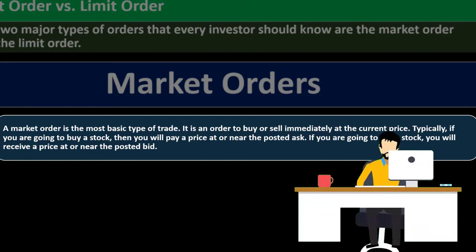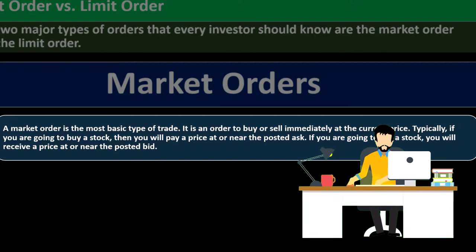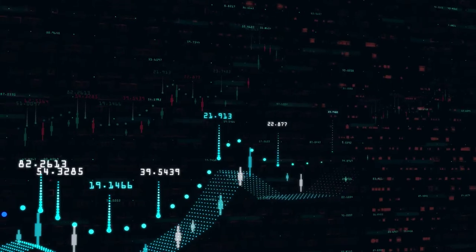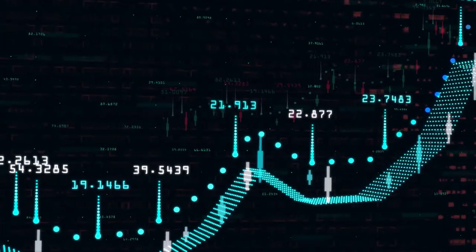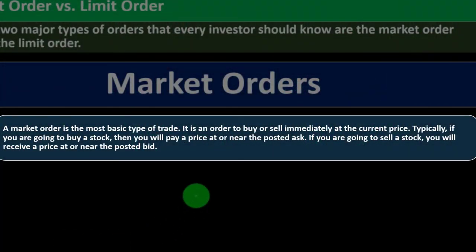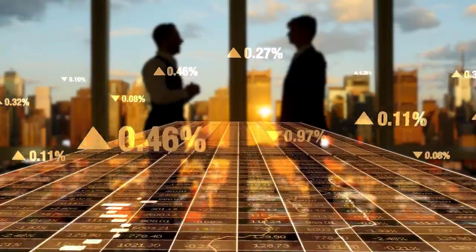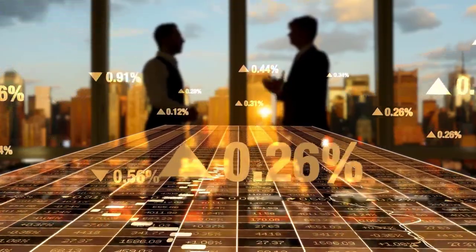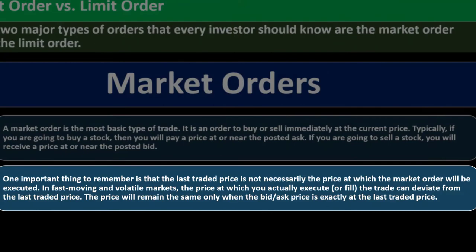Stocks trade on the stock exchange as standard units of ownership in a corporation. Because of market trading, we can know what the market price is, helping us to set prices and make trades. A market order is an order to buy or sell immediately at the current price. If you are buying a stock, you will pay a price at or near the posted ask; if selling, you will receive a price at or near the posted bid.